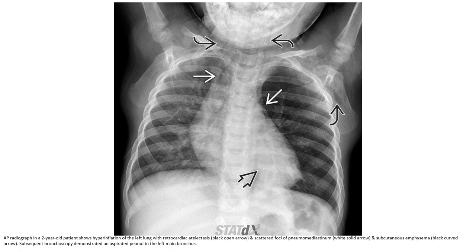This is the AP radiograph of a two-year-old patient. There is hyperinflation of the left lung with retrocardiac atelectasis and scattered pockets of pneumomediastinum. Subsequent bronchoscopy demonstrated an aspirated foreign body in the left main bronchus.